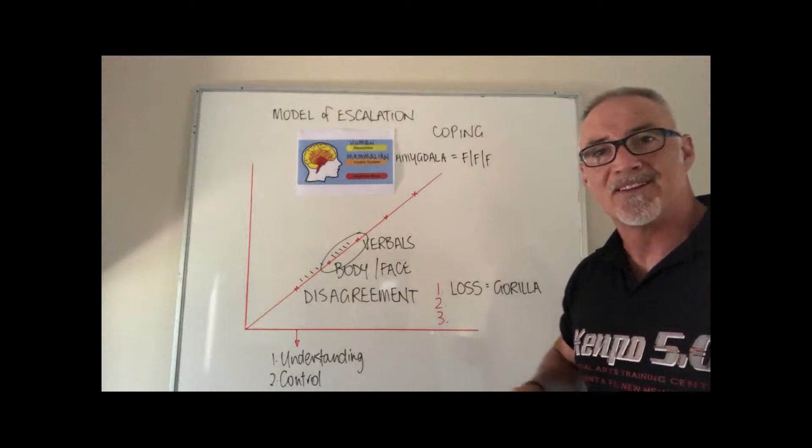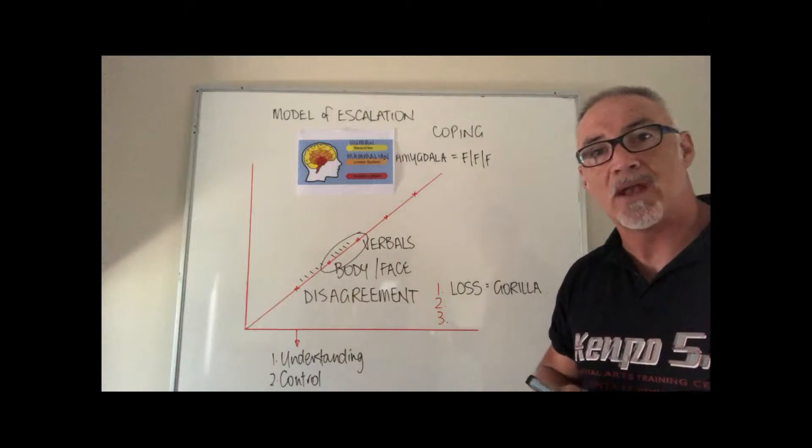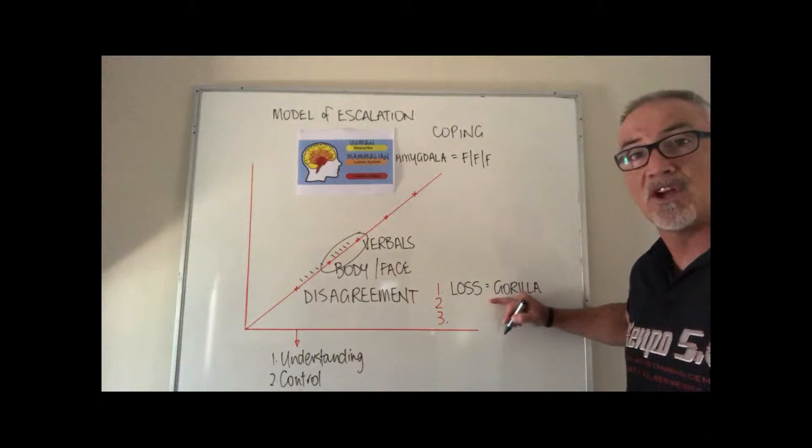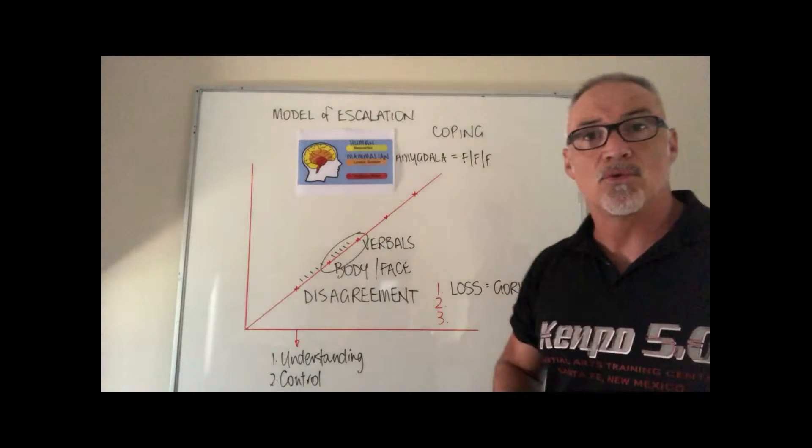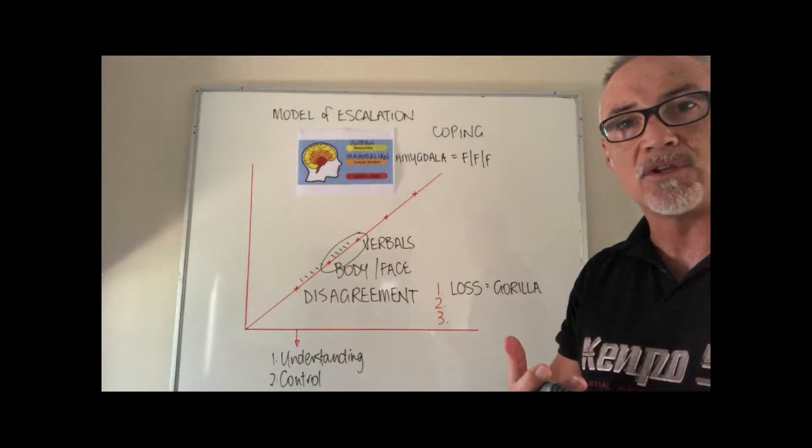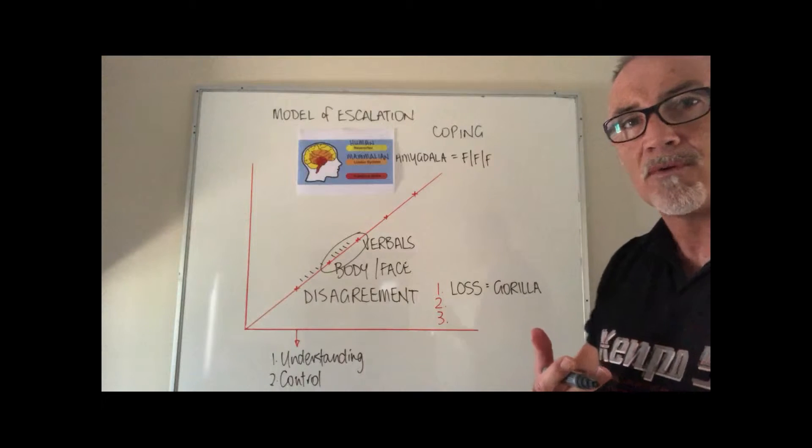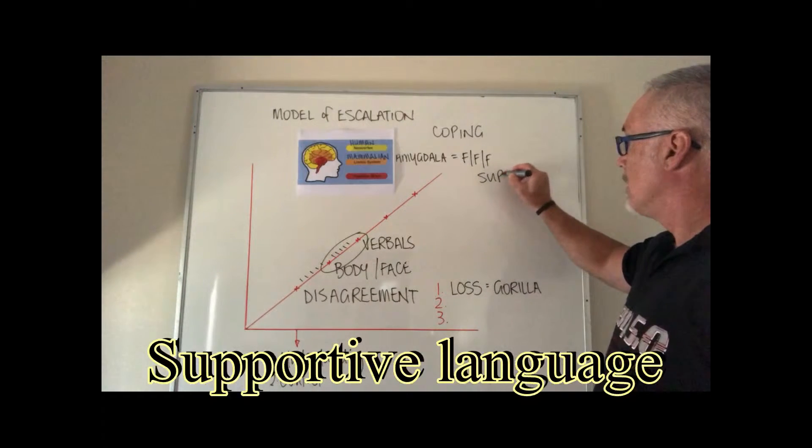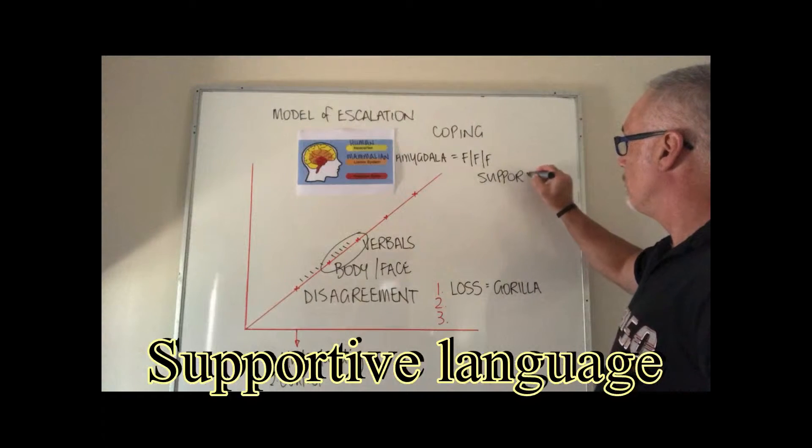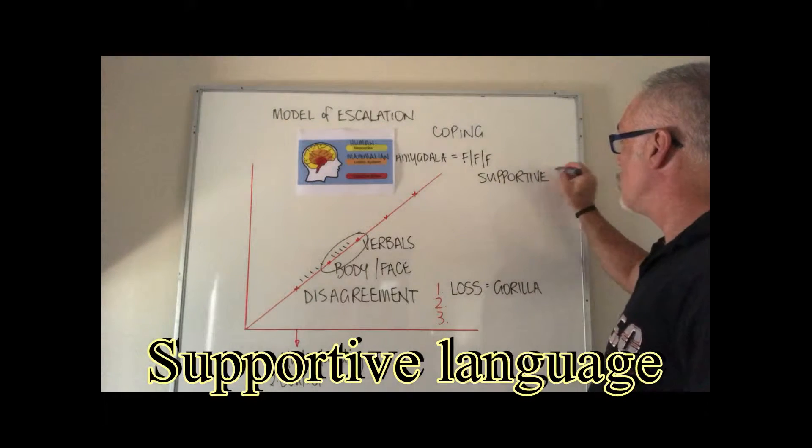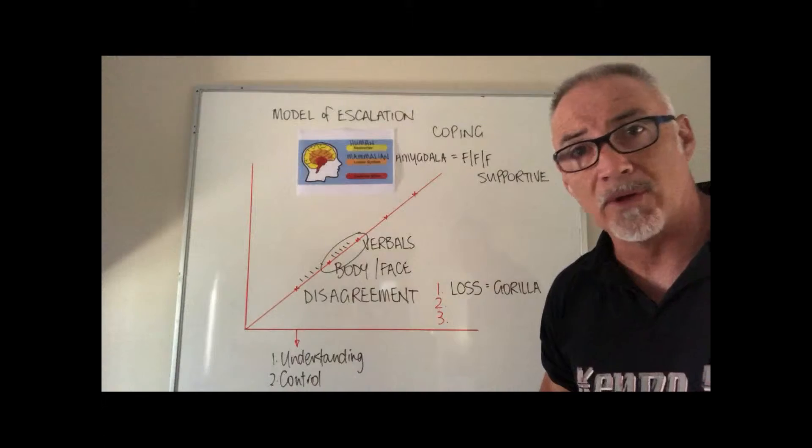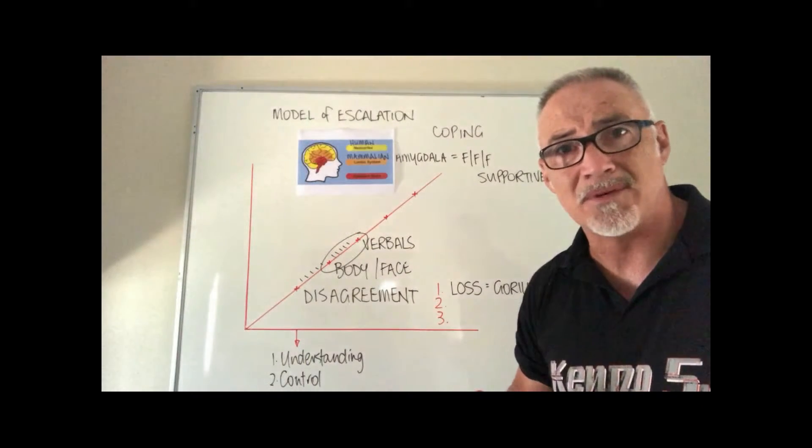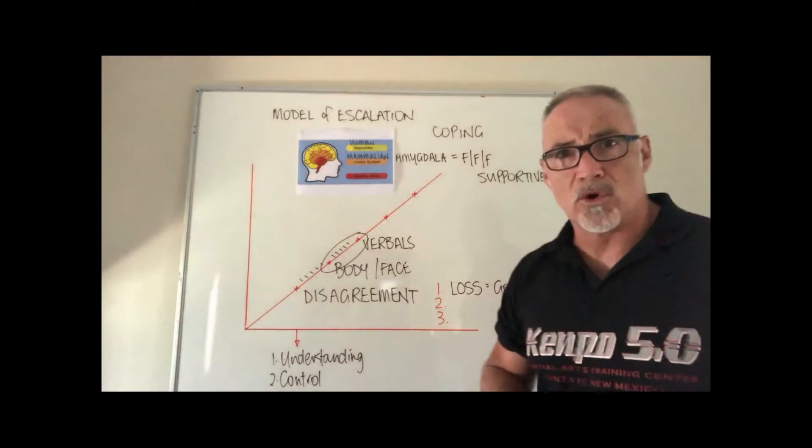Now we provide a treatment and the treatment for loss related aggression, the way to treat the gorilla, is through supportive language. You must be supportive. This is really important because everyone knows you don't poke a gorilla. That's just dumb.